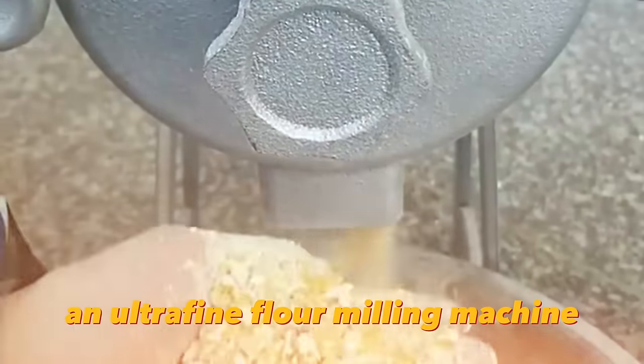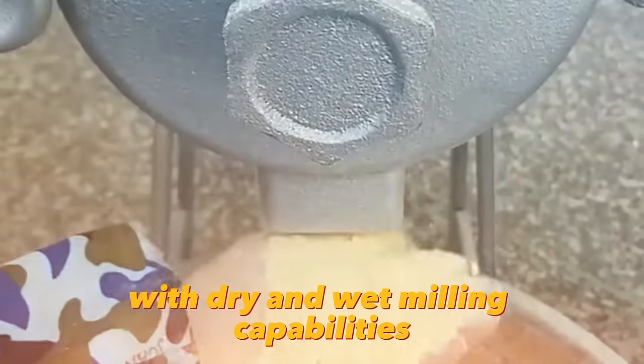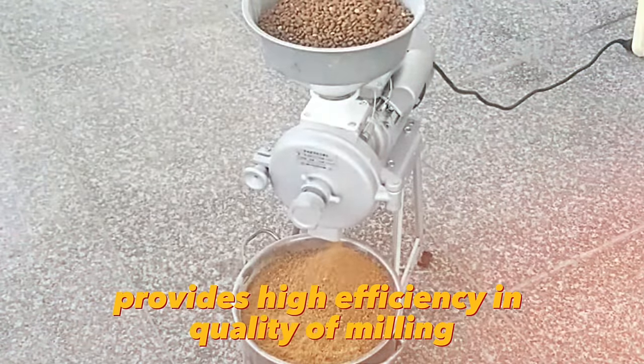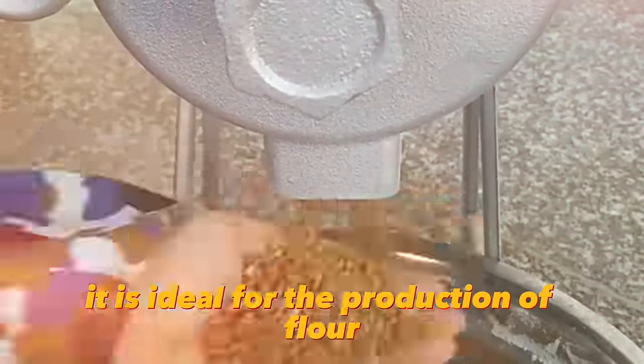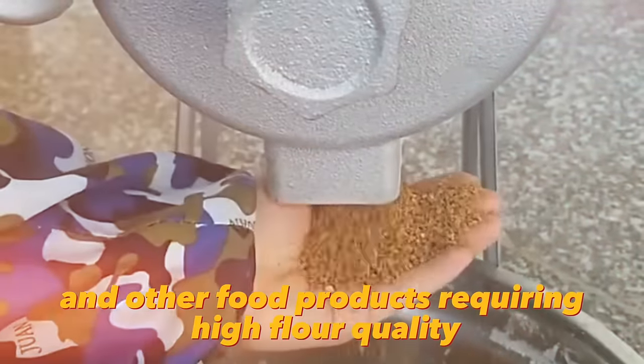An ultra-fine flour milling machine for grinding flour from different types of grains such as wheat, soybean, corn and rice, with dry and wet milling capabilities, equipped with a 1500-watt motor, provides high efficiency and quality of milling. It is ideal for the production of flour for baking, pasta and other food products requiring high flour quality.